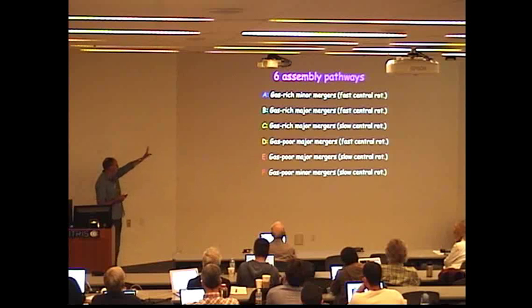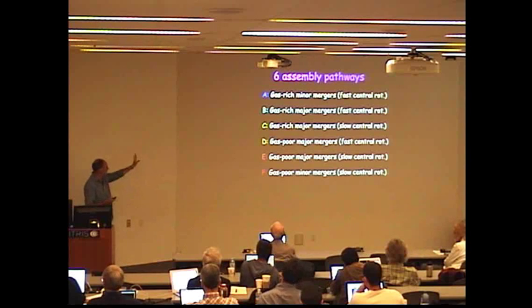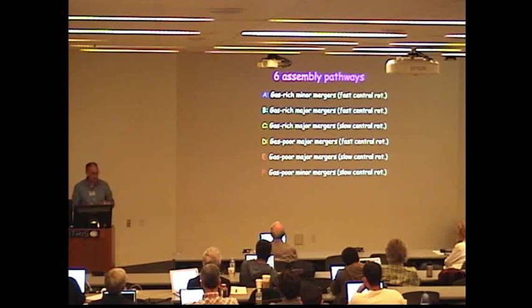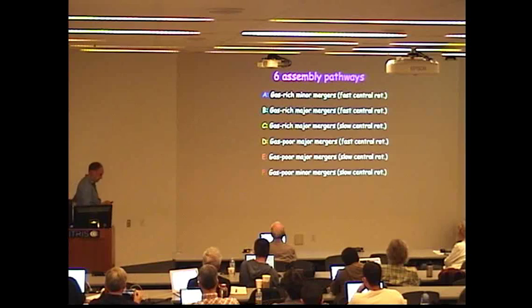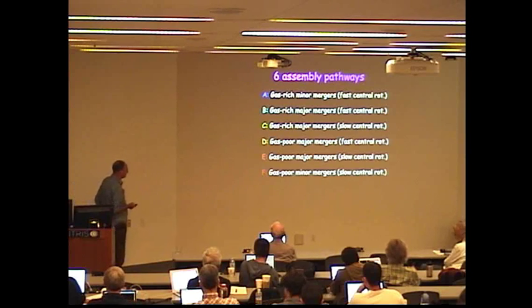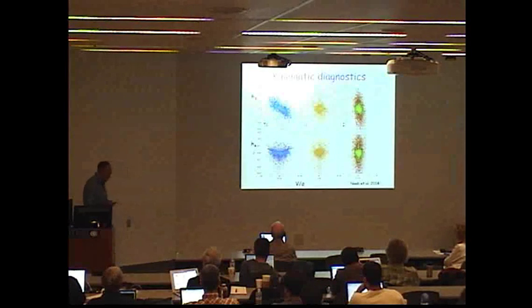They identified six assembly pathways according to the different kinematics that their simulated galaxies had. You can see from A through F different types of merger, whether they involved gas or did not involve gas, and whether it led to a galaxy that was centrally fast rotating or centrally slow rotating. Here's the diagnostics they used.